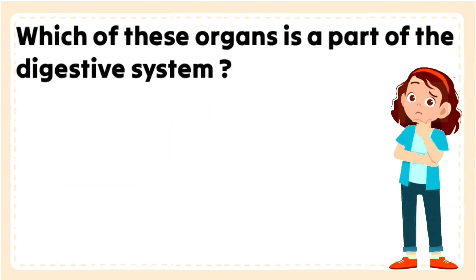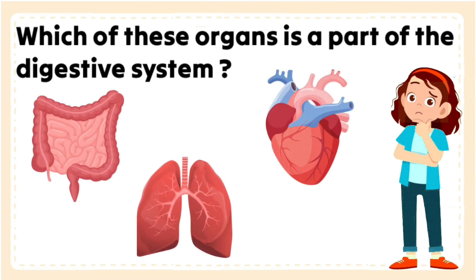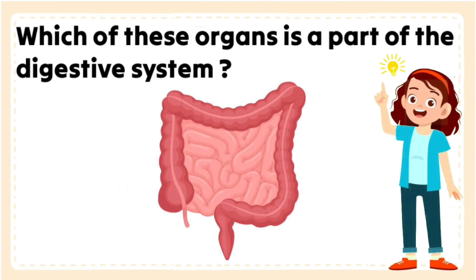Which of these organs is a part of digestive system? The correct answer is our intestines. They help to further digest food coming from the stomach. Intestines absorb nutrients and water from food so they can be used by the body.